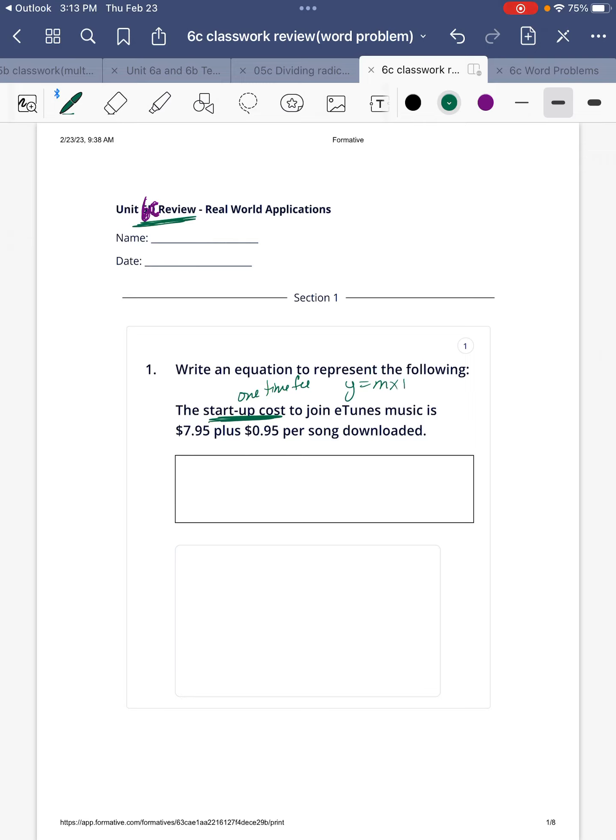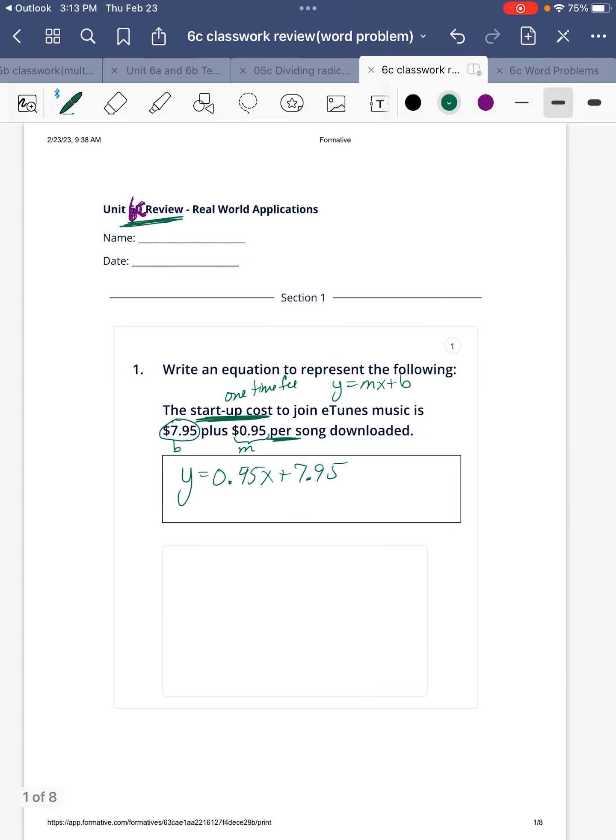One-time fee means we should be using y equals mx plus b. One-time fee is $7.95, that's your b. Now you see this per song, that means how much it costs is going to be your m, that's your slope. So our equation is y equals 95 cents times x plus $7.95.